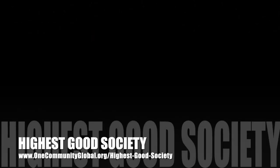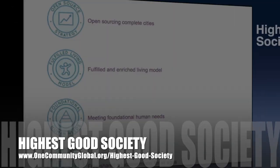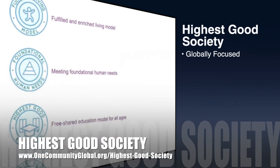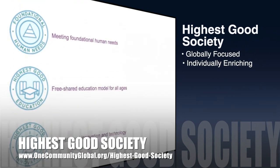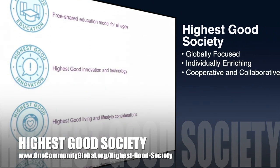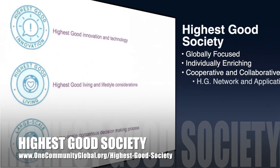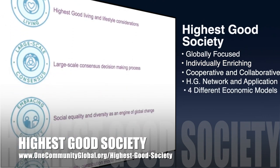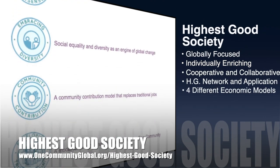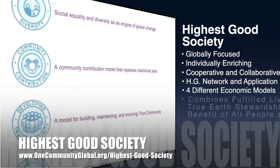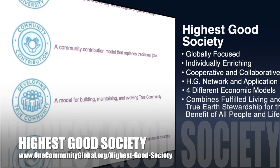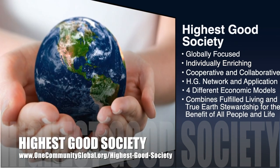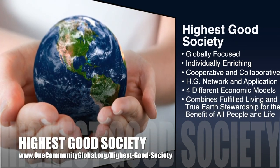The One Community approach to highest good society is globally focused, individually enriching, cooperative and collaborative, includes a highest good network and application, four different economic models, and combines fulfilled living and true earth stewardship for the benefit of all people and all life on this planet.